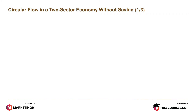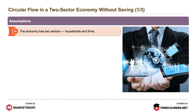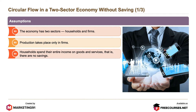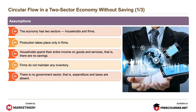Next is circular flow in a two-sector economy without savings. The assumptions are: the economy has two sectors — households and firms; production takes place only in firms; households spend their entire income on goods and services, that is, there are no savings; firms do not maintain any inventory; there is no government sector, meaning expenditure and taxes are absent; and the foreign sector is absent.